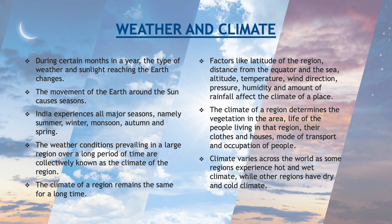The climate of a region determines the vegetation in the area, life of the people living in that region, their clothes and houses, mode of transport and occupation of people. Climate varies across the world — some regions experience hot and wet climate while other regions have dry and cold climate.